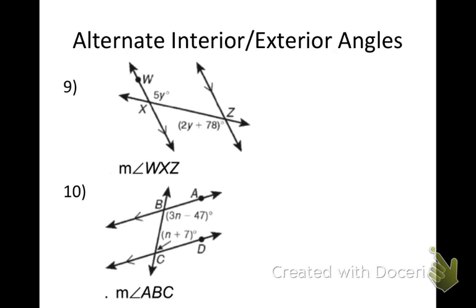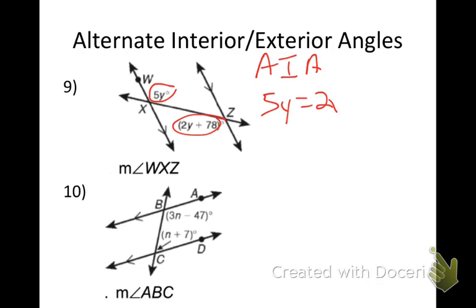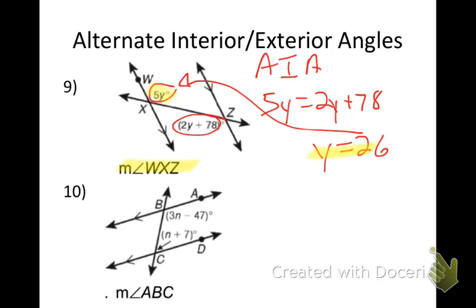Let's go through number nine. What type of angles are these? Those are alternate interior angles. So I'd set them equal: 5Y = 2Y + 78. Solve for Y — you get Y = 26. Then I want angle WXZ, so I take 26 and plug it in: 5 times 26 gets me 130 degrees.